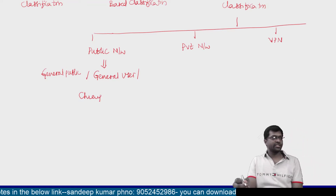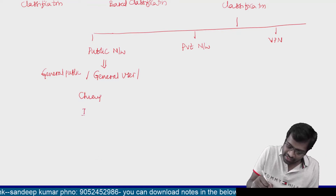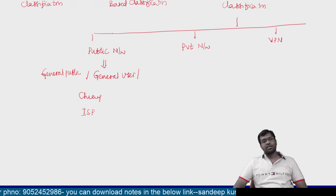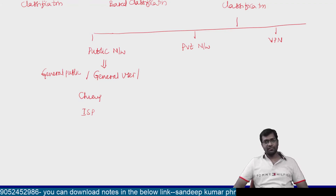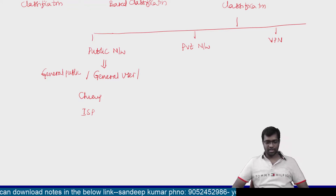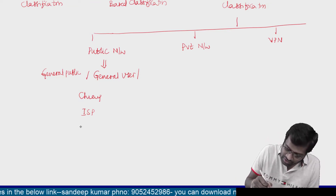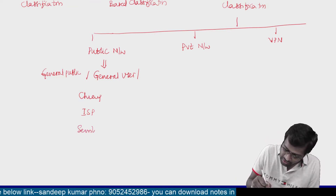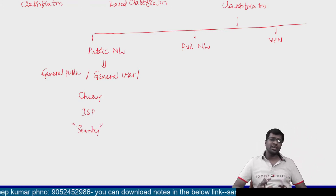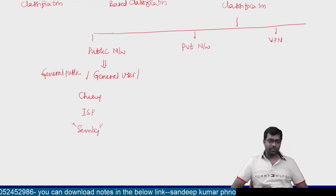These networks are very, very cheap. Who will maintain public networks? These public networks are maintained by the ISP — Internet Service Provider. The ISP will charge users a certain fee for providing network access to the general public. However, the problem with public networks is security — it cannot provide maximum security. The security is very less compared to a private network or a virtual private network.